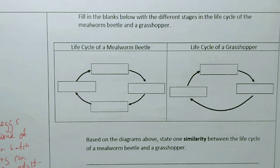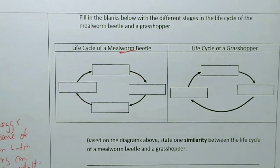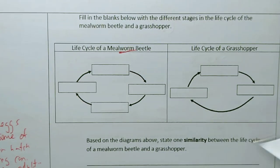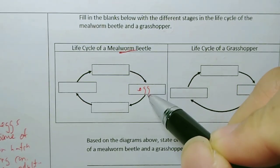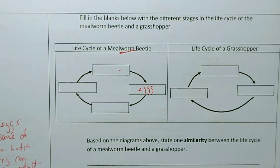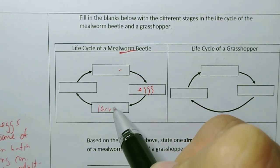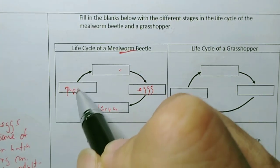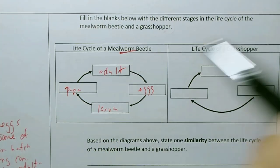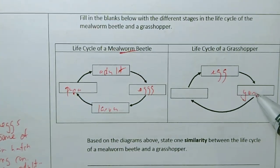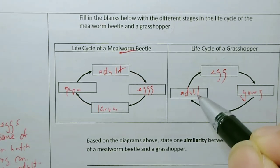Fill in the blanks with different stages in the life cycle of a mealworm beetle. You must know meal beetle and grasshopper. This will be four stage life cycle. You can write any part. I'll start with egg here. Egg, larva, pupa, adult. Very simple. Egg, young, adult. Very simple.